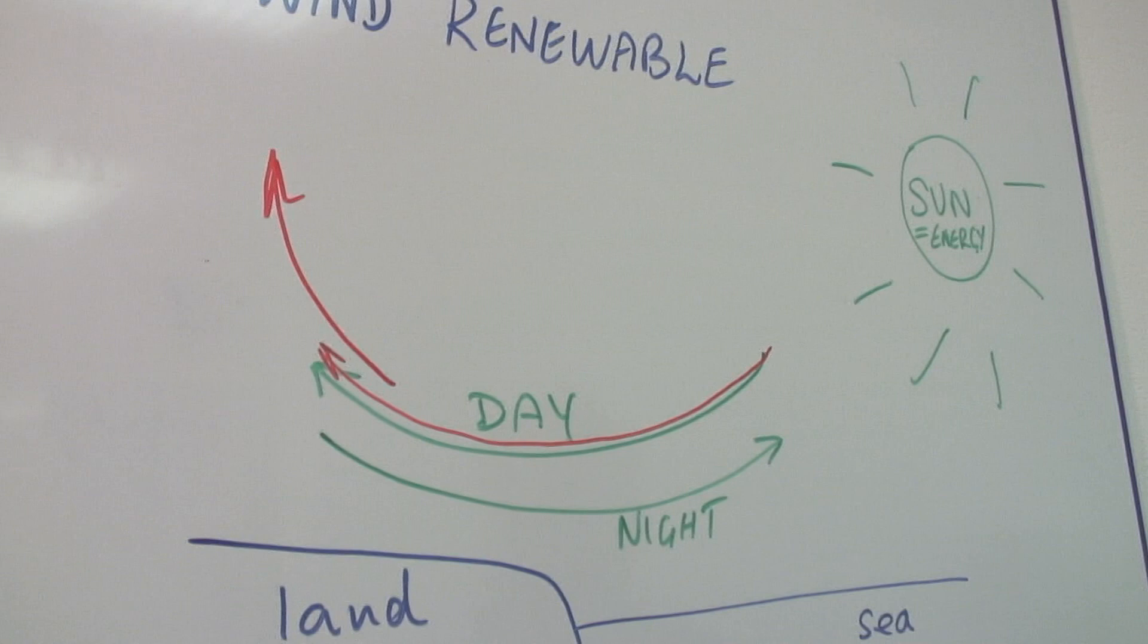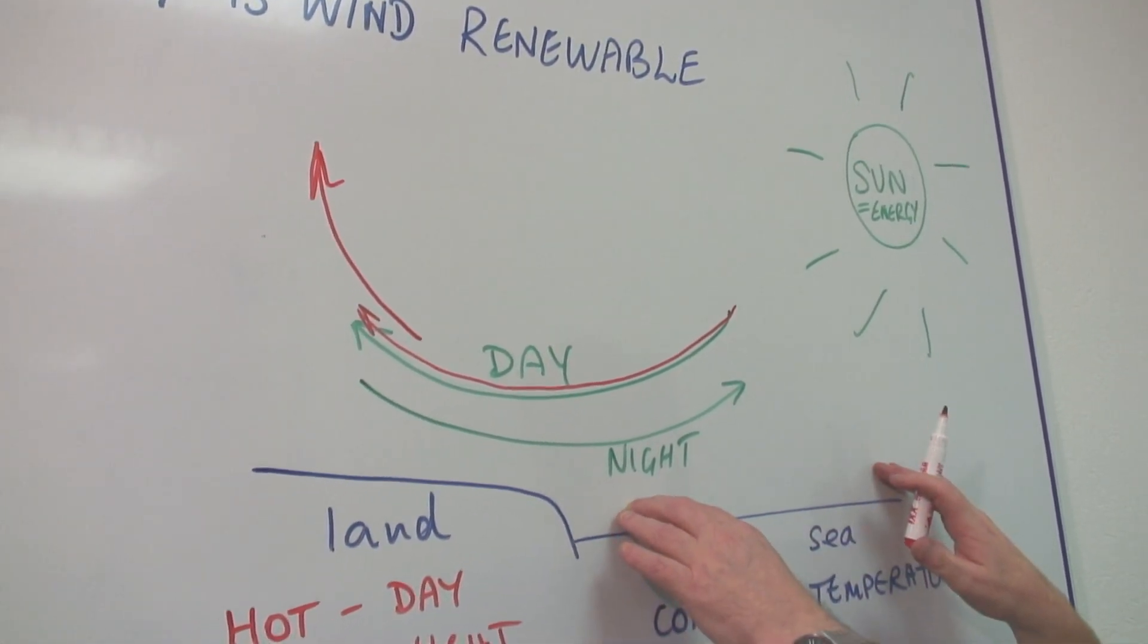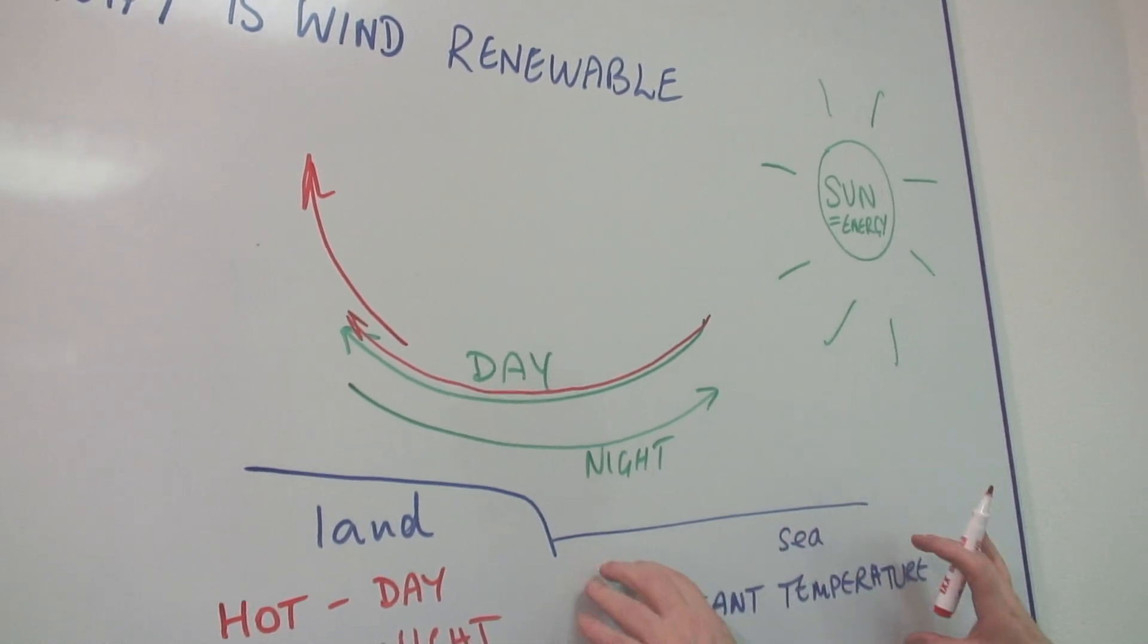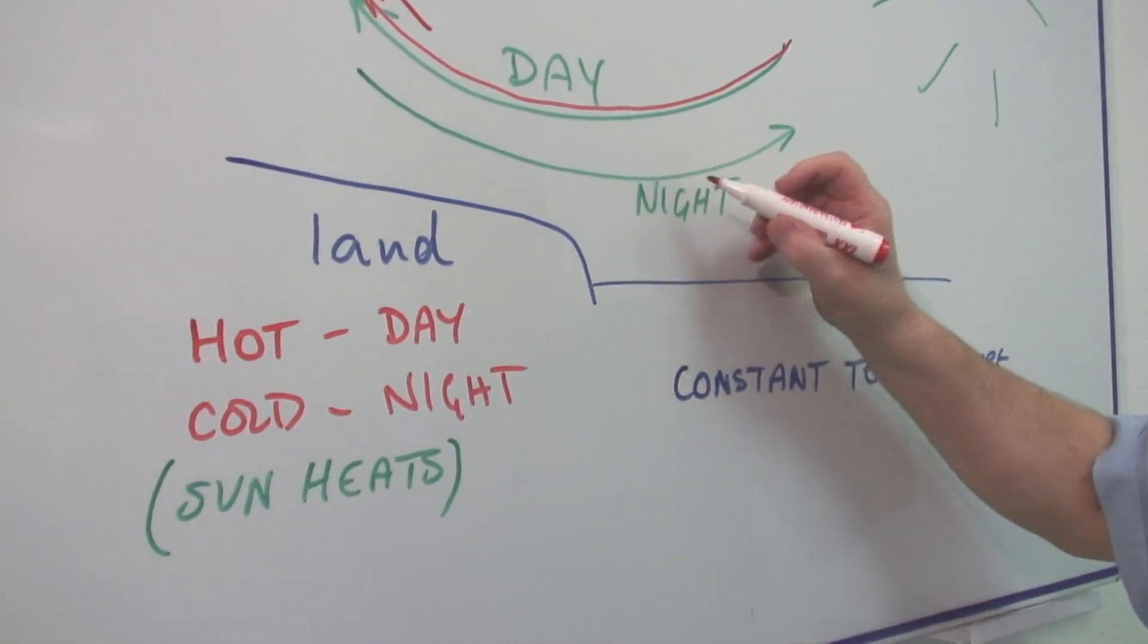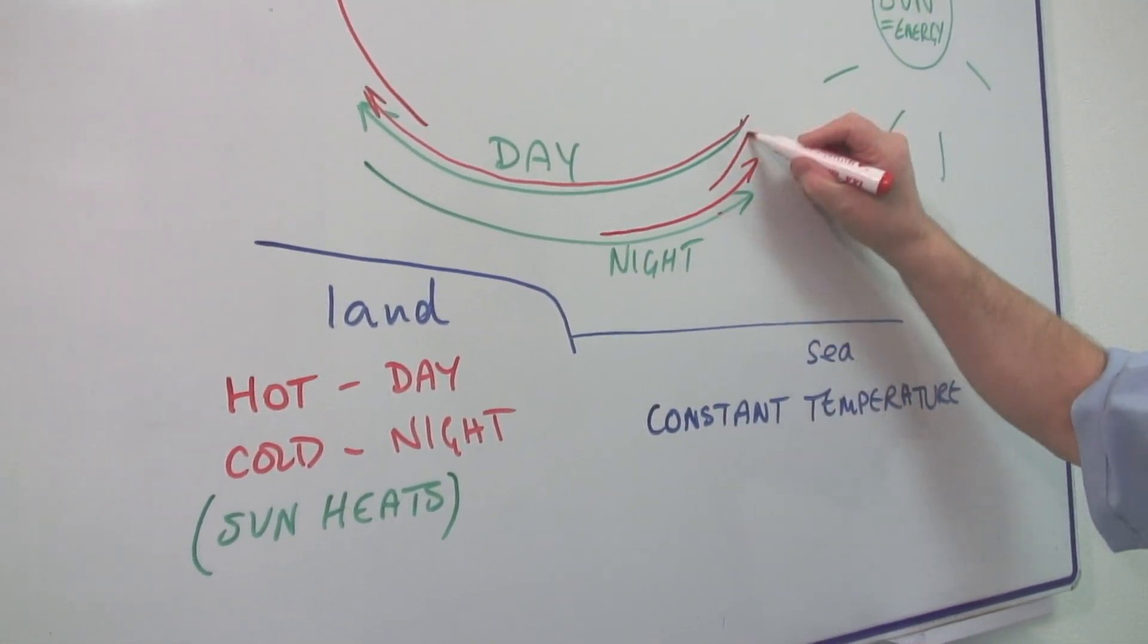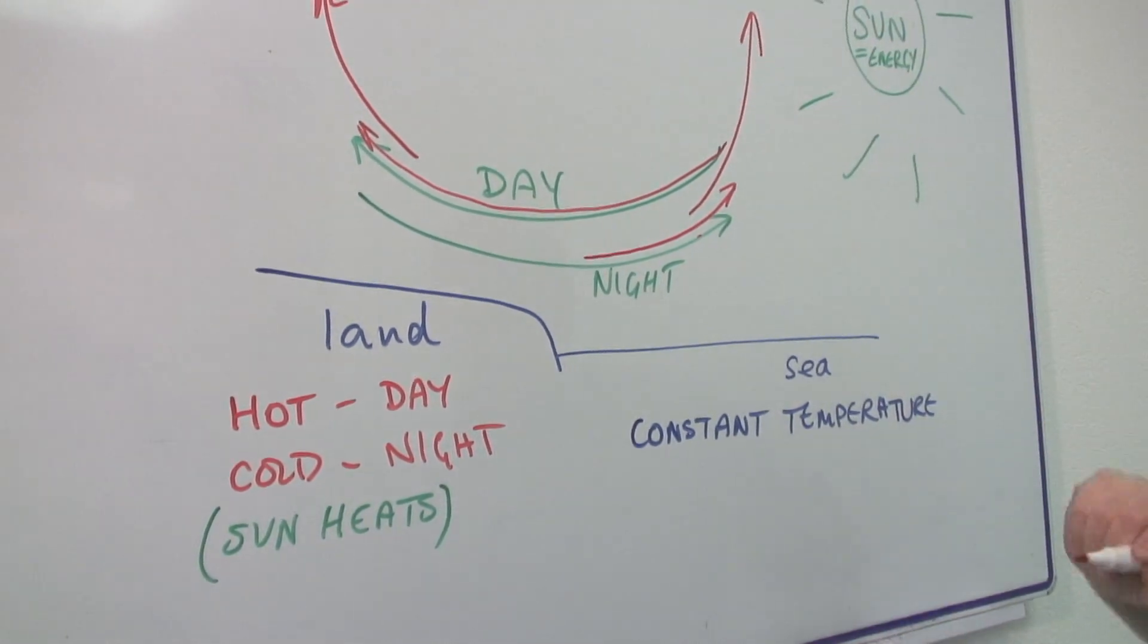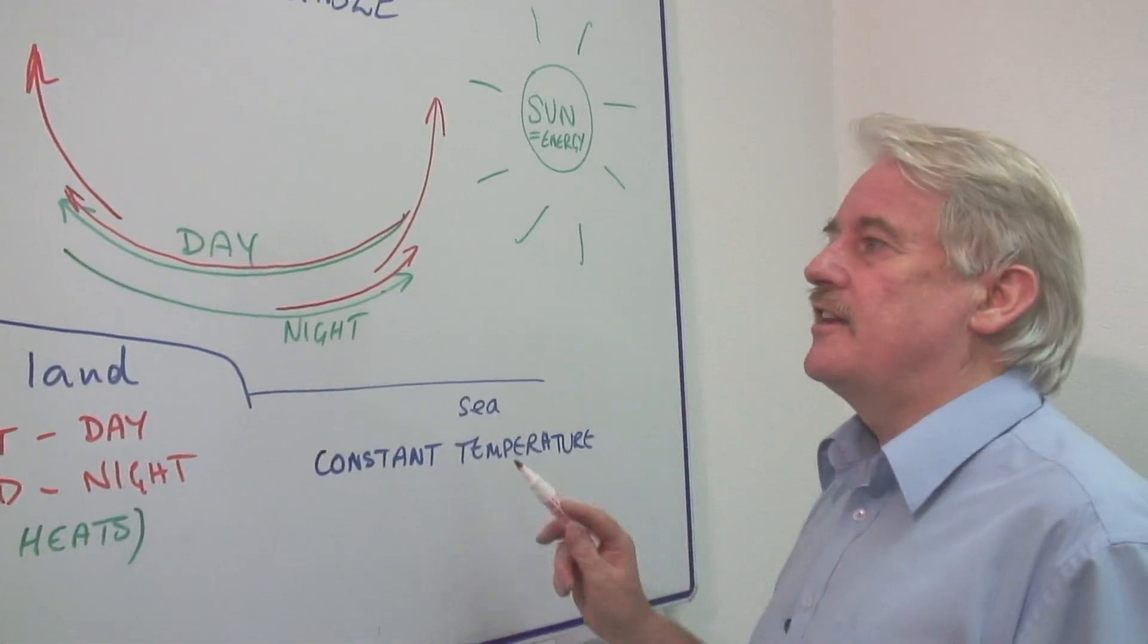Now, what happens at night when this is cold and this is comparatively warmer, actually this is the same temperature, but this is cooler. We get the same effect that the air is going to move upwards in this area at night. And therefore, we get a breeze off the land at night.